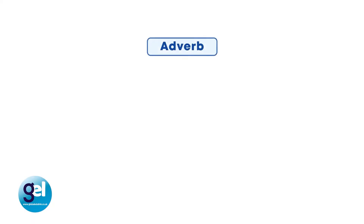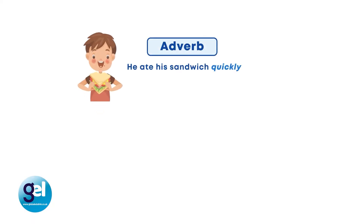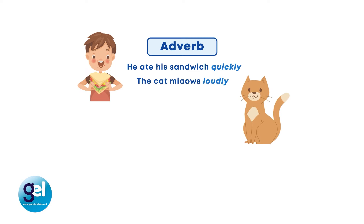Let's now focus on an adverb. An adverb is a word that modifies or describes a verb or adjective. He ate his sandwich quickly — in this sentence, quickly is describing the verb ate. Another example: the cat meows loudly — here loudly is describing the verb meow.